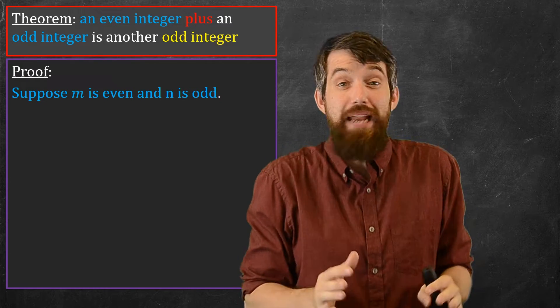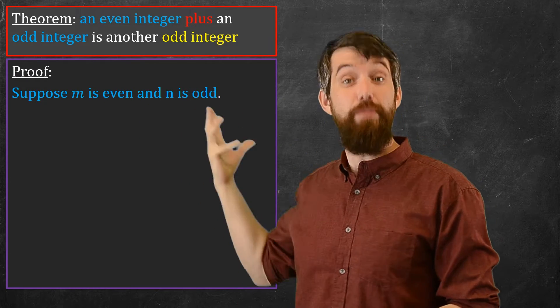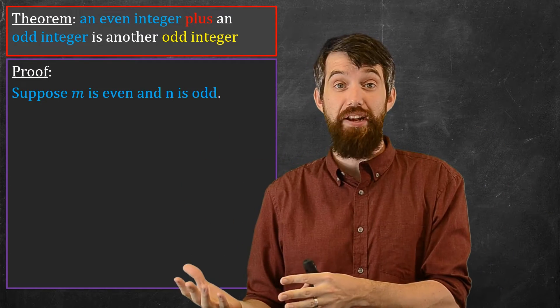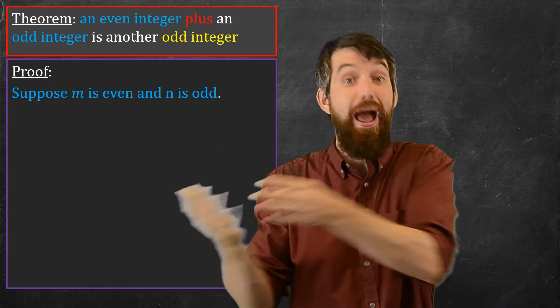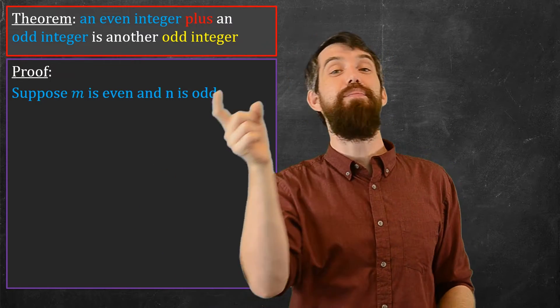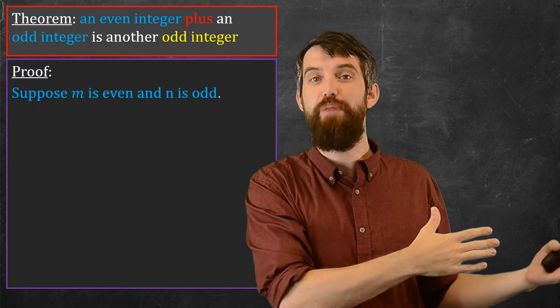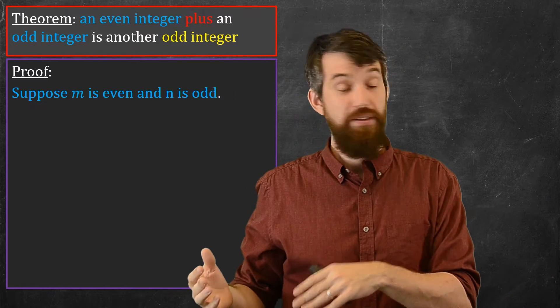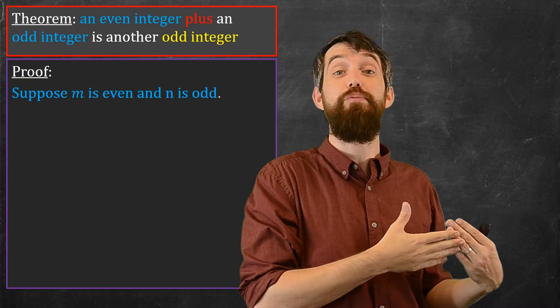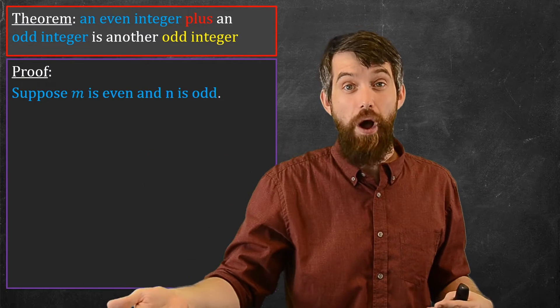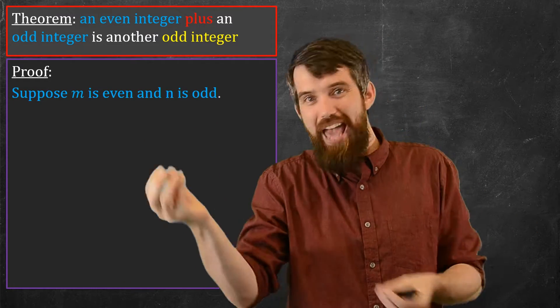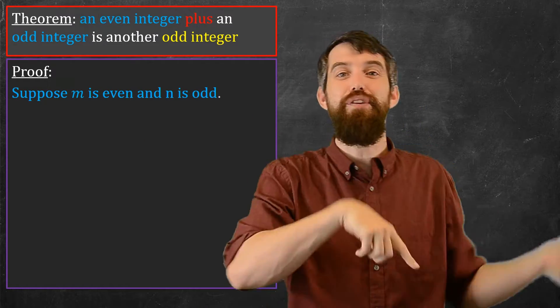Now the problem right now is that m being even and n being odd is still a little bit imprecise, but thankfully we've already defined the precise notion of what it means to be even and odd. To be even, it says that there is some integer k such that m can be written as twice k. To be odd, it means that there is some other integer k so that n can be written as twice k plus 1. However, because I've got two different numbers here, the m and the n, you get two different k's.